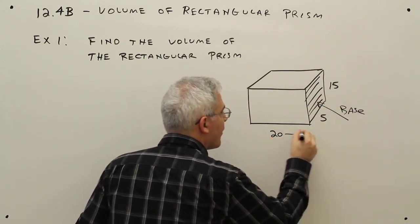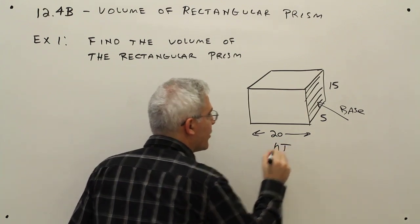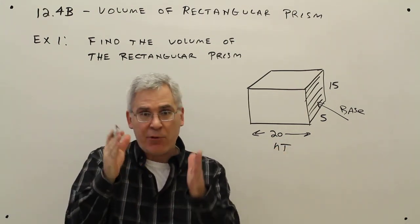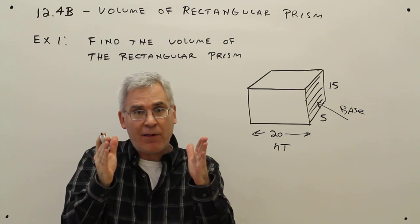And then this will be the height. Height has nothing to do with up and downness. It's the distance between the two parallel and congruent bases.